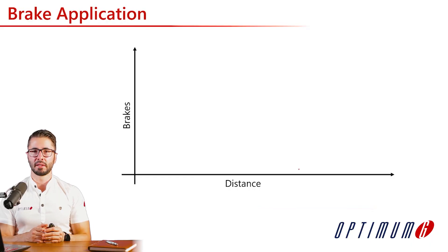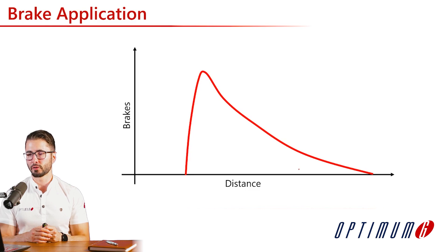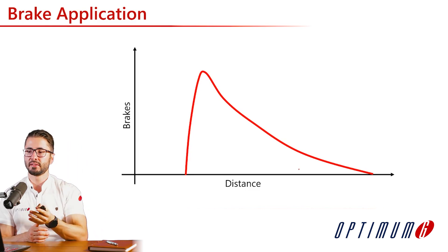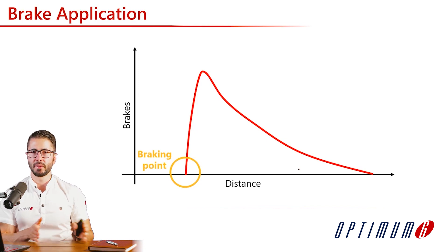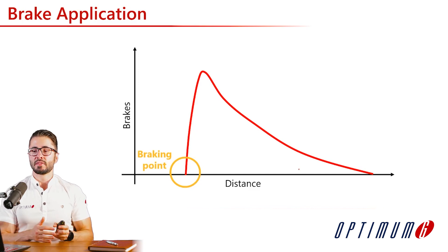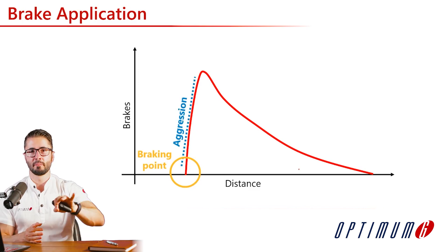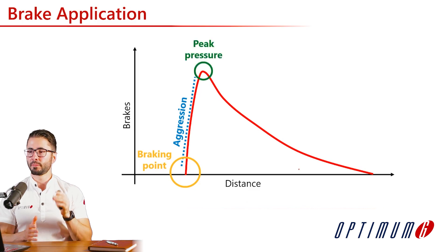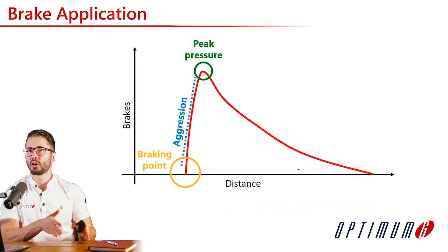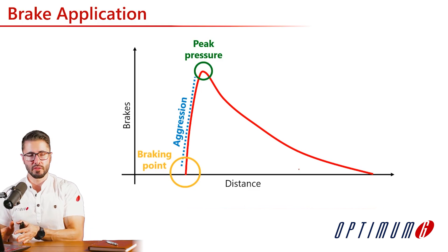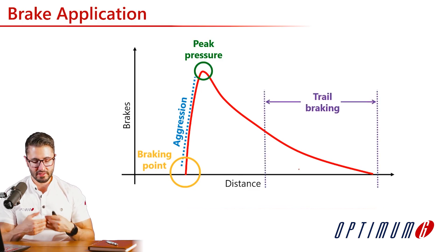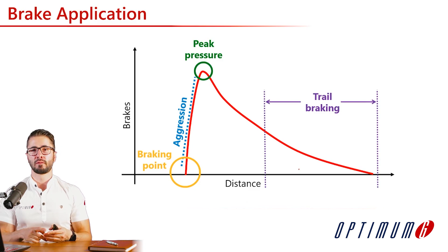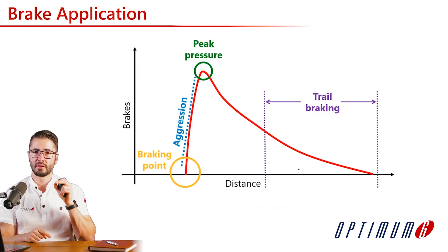Looking at brake application, we consider a typical brake pressure profile where you increase pressure and then decrease as you trail brake into the corner. Parameters to look at: braking point, aggression — how quickly the driver jumps on the brakes and builds pressure — and peak pressure, comparing drivers to understand why one achieves higher decelerations. We also focus heavily on trail braking: how much the driver carries the brakes into the corner, which exploits combined tire grip and influences car balance.